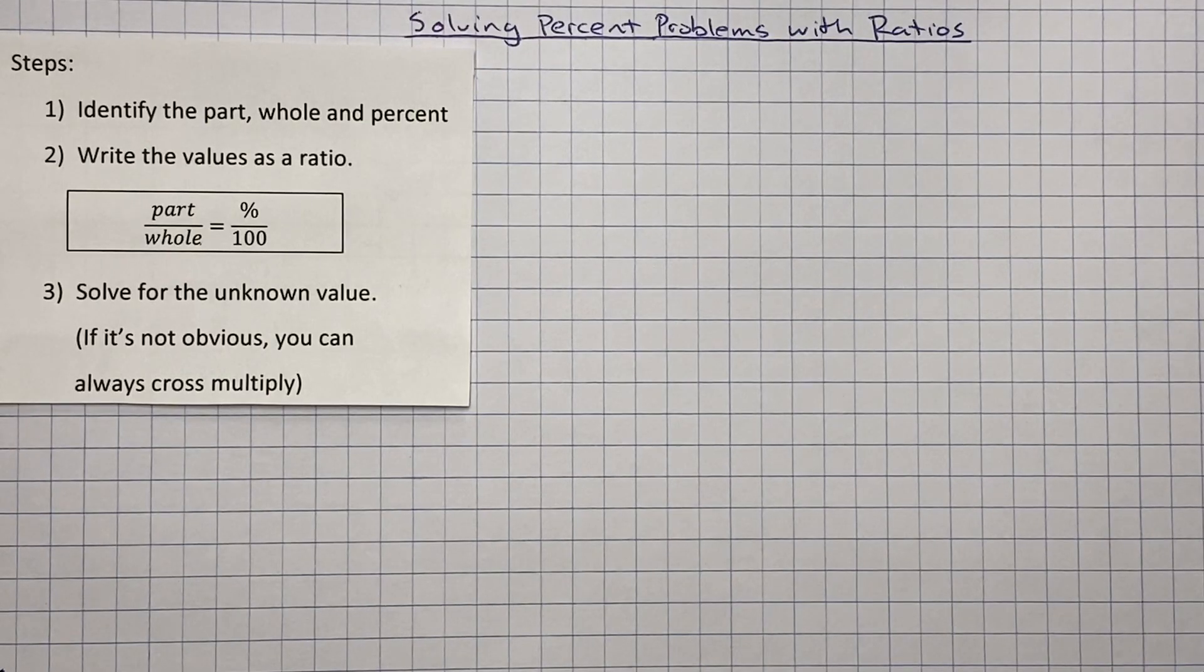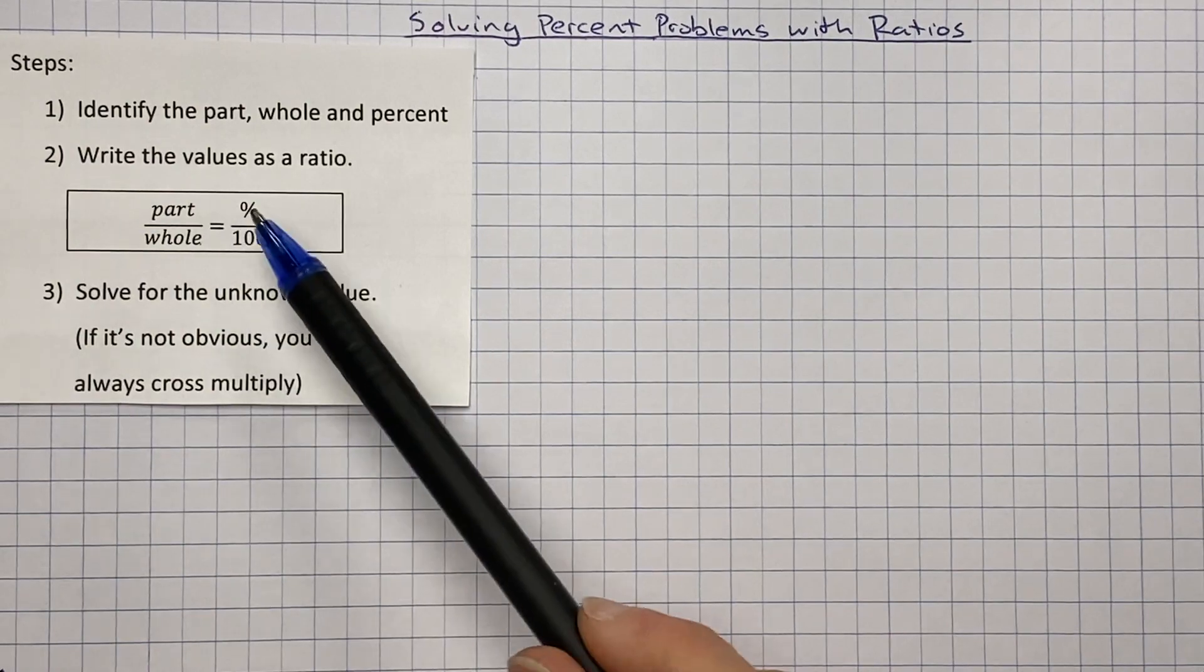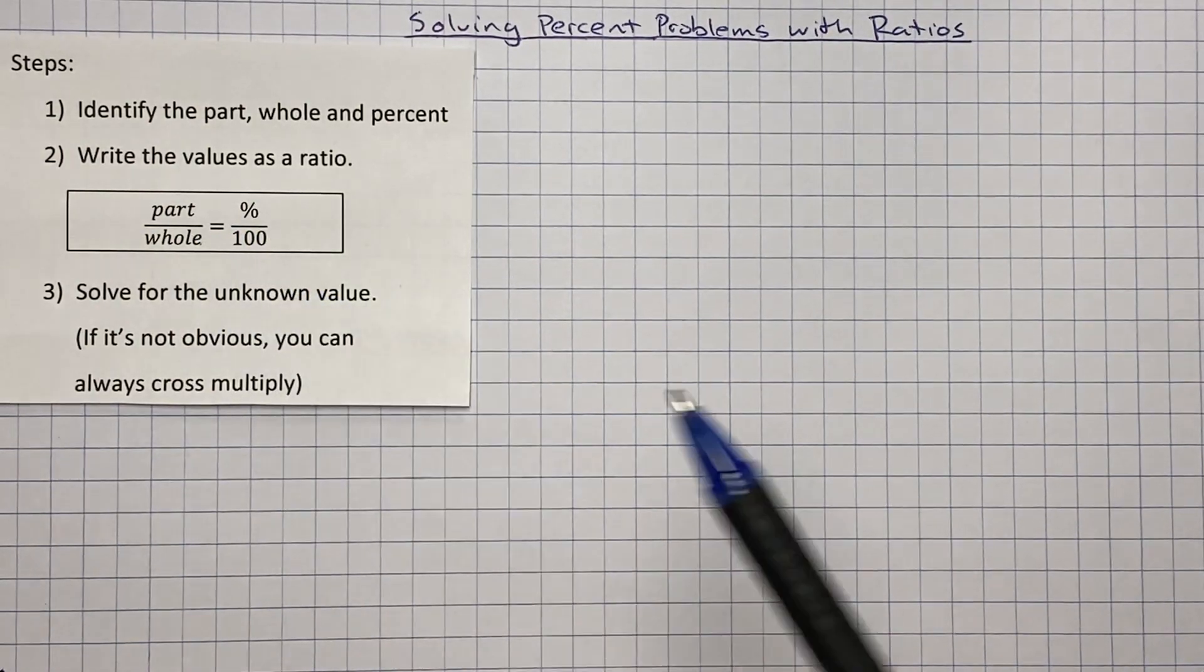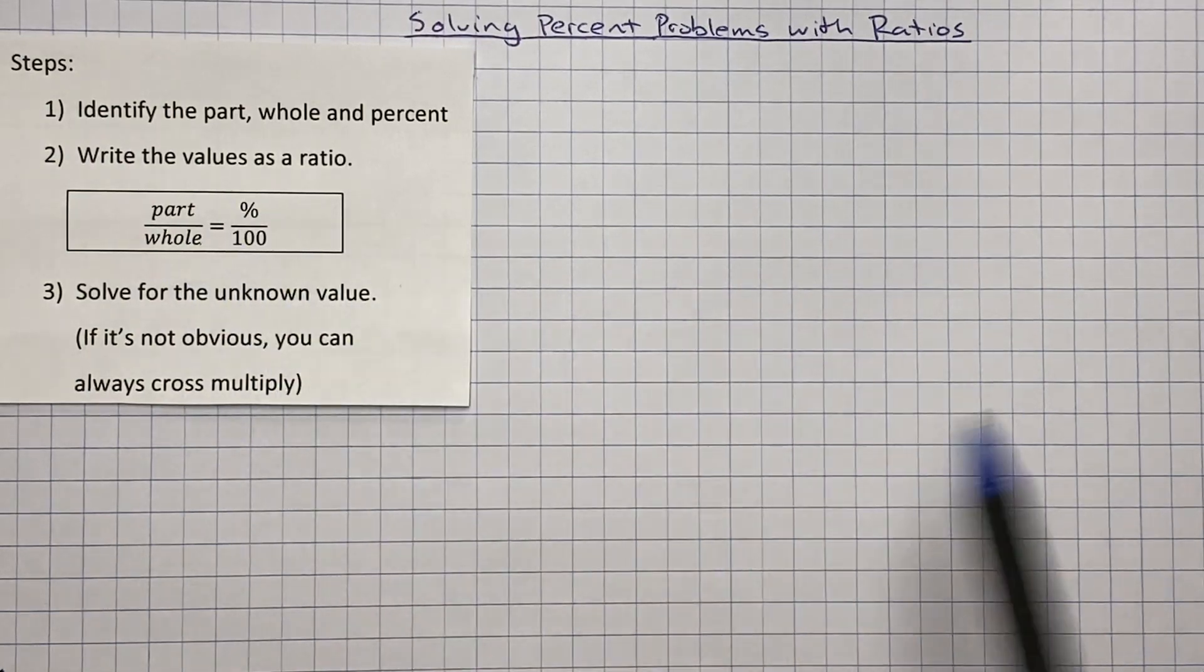Okay, so we're going to look a little bit at percent problems and specifically how we can use ratios to solve them. Again, ratio is a comparison of two things. We can look right here. We've got an example of a ratio. We've got part over whole equals percent over 100. So those are the things we're comparing. And we can use this to solve most ratio problems.